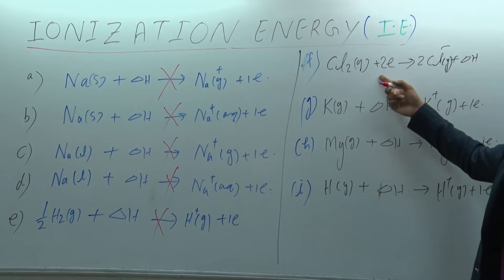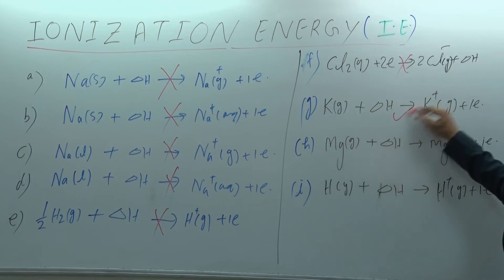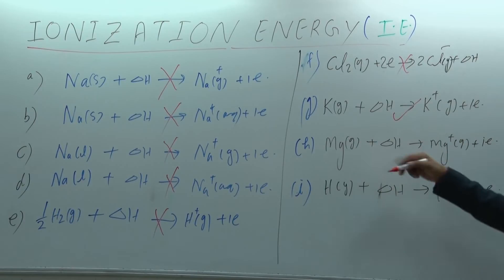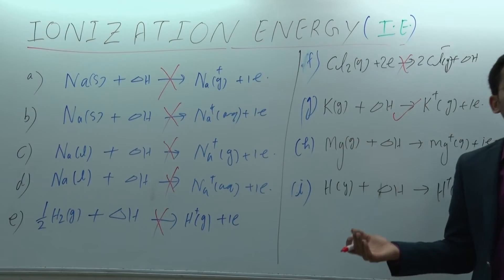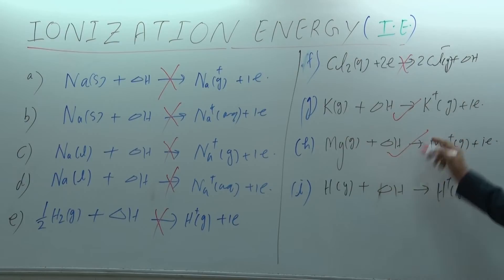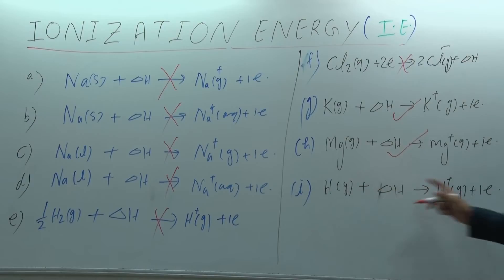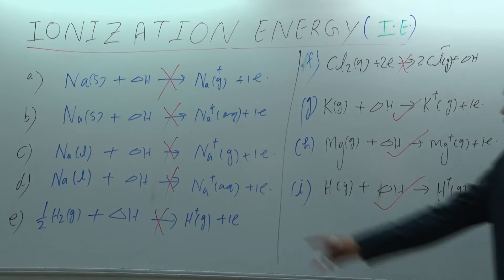Here, hydrogen gas going to gaseous ion — it is not necessary that there is always a loss of two electrons. If there is a single electron loss from a gaseous atom, it is also called ionization energy. So that reaction is true. What about this one? Hydrogen gas to gas — that is also true. But the other one is not true.